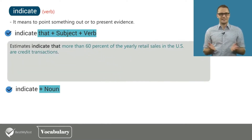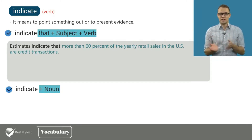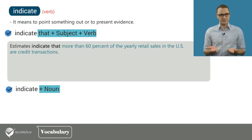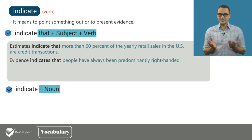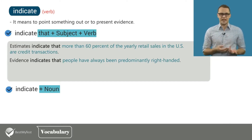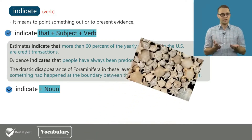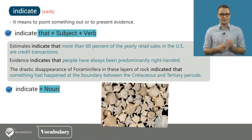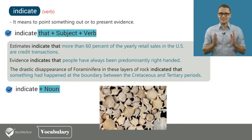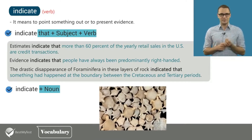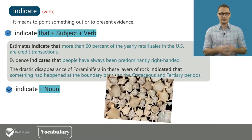Let's look at some example sentences using the first pattern. Estimates indicate that more than 60% of the yearly retail sales in the US are credit transactions. Evidence indicates that people have always been predominantly right-handed. The drastic disappearance of Foraminifera in these layers of rock indicated that something had happened at the boundary between the Cretaceous and Tertiary periods.